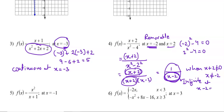So we have infinite discontinuity at x - 2 = 0, i.e., at x = 2.